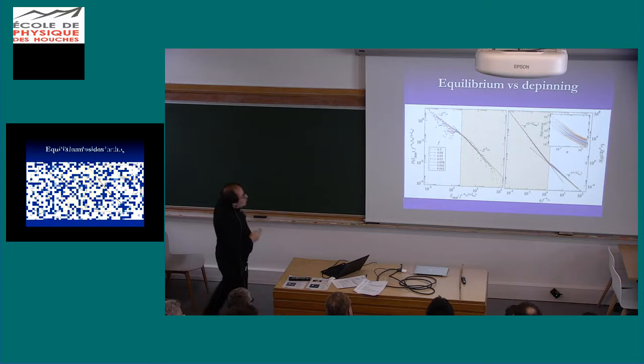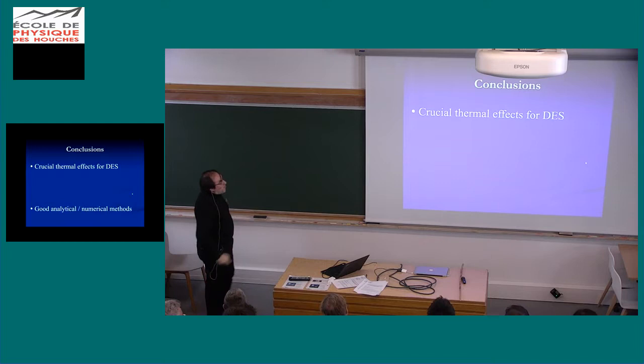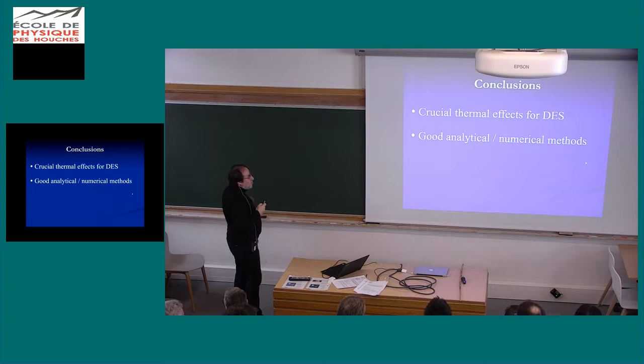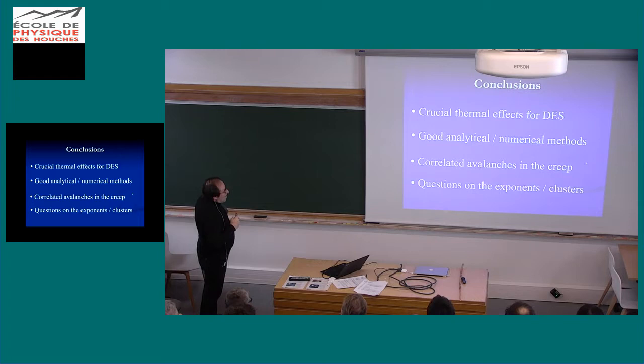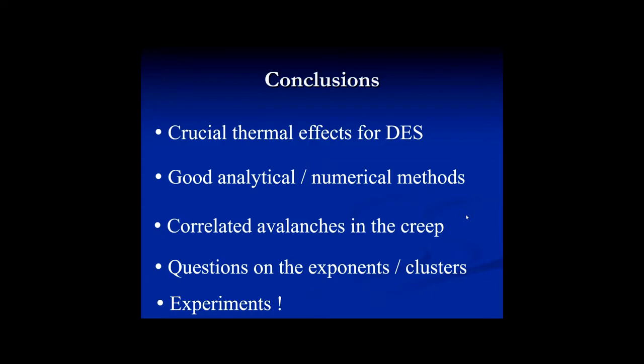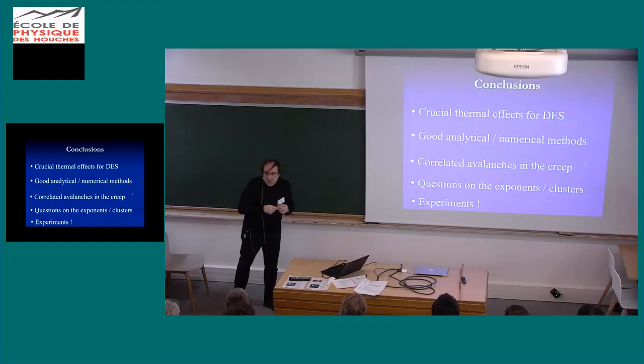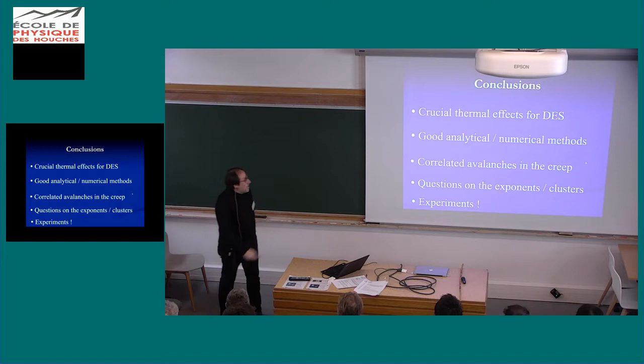My time is up. It's time to conclude. There are crucial thermal effects for disordered elastic systems. We have some level of good analytical and numerical methods, but there is still a lot of things that we need to understand. The take-home message is that there are avalanches in the creep, but they are extremely correlated spatially, and there are still some open question on the clusters and the exponents. And of course, then the cherry on the top of the cake is if this can be checked in experiment. And on that, I stop and thank you for your attention.